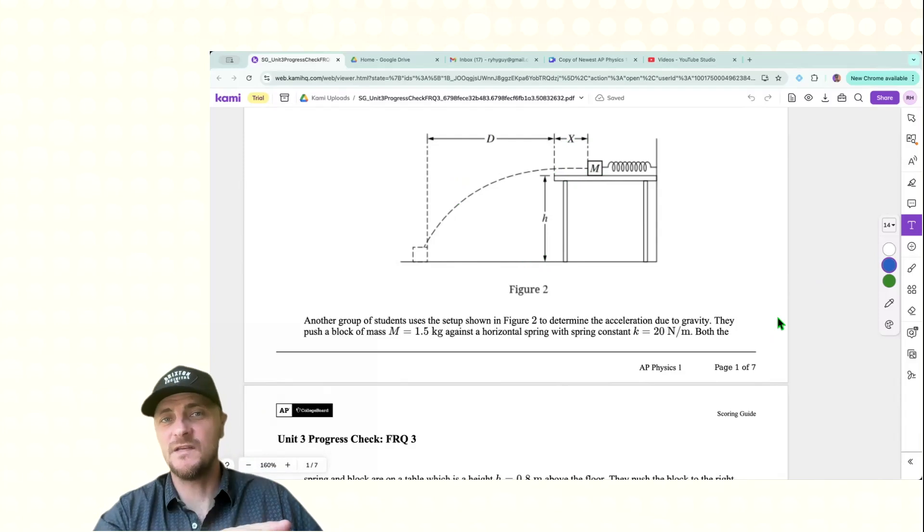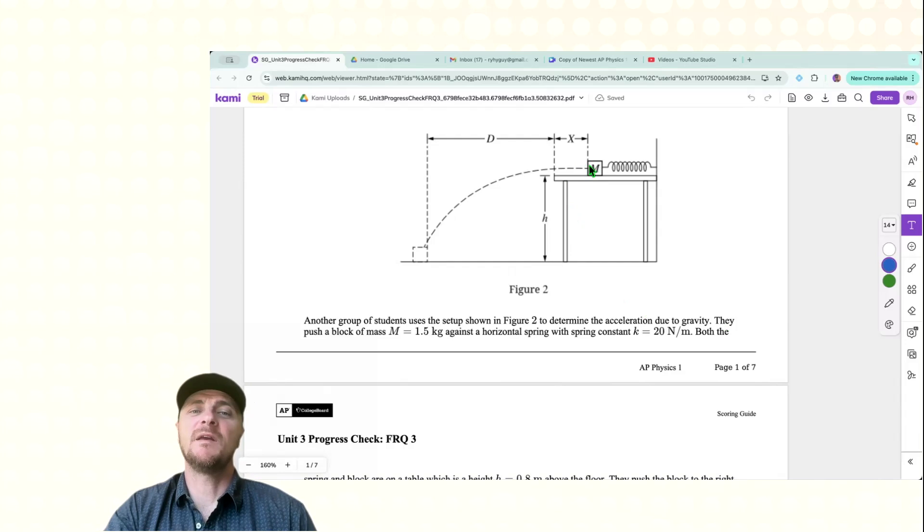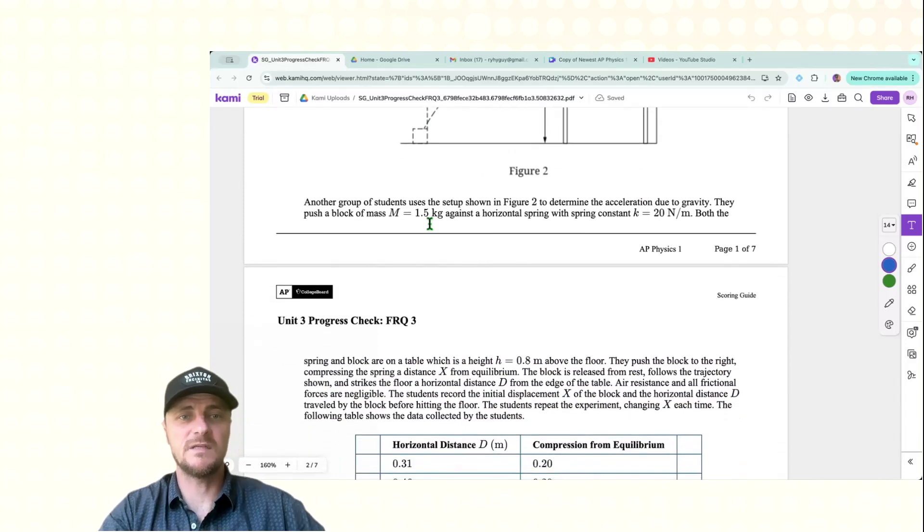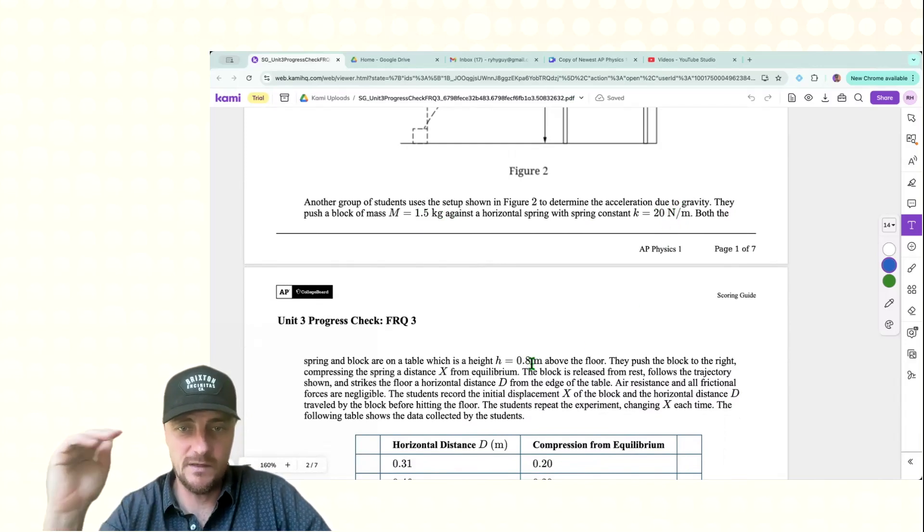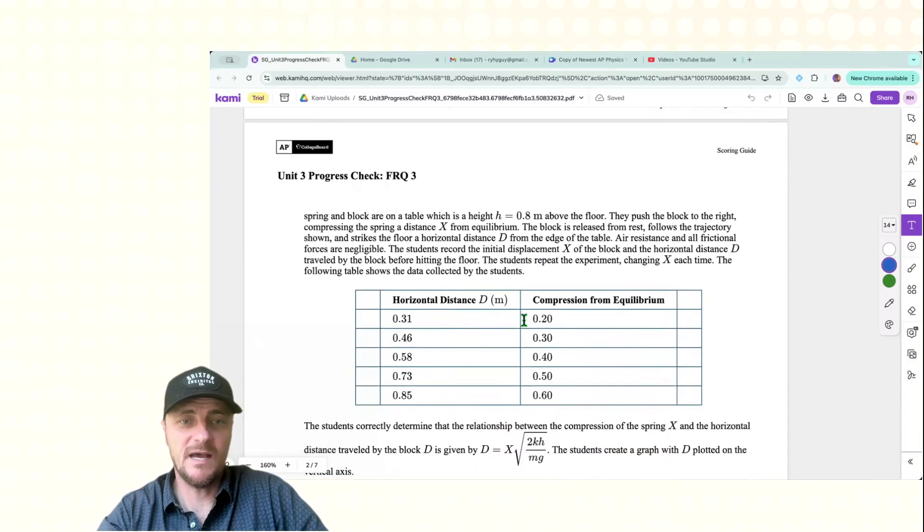So this is Part C. It's got three parts. This is the system that we're going to be looking at. We have a mass that's been compressed this length X. When it's released, it goes this far distance D from the edge of the table. And we have a height H that we know. We know the mass, and basically, we're looking at this X as our independent variable and this D as our dependent variable. So as you look through the verbiage, you can see our mass is 1.5 kilograms. K is 20 newtons per meter. The height is 0.8. So all of those things are constant.